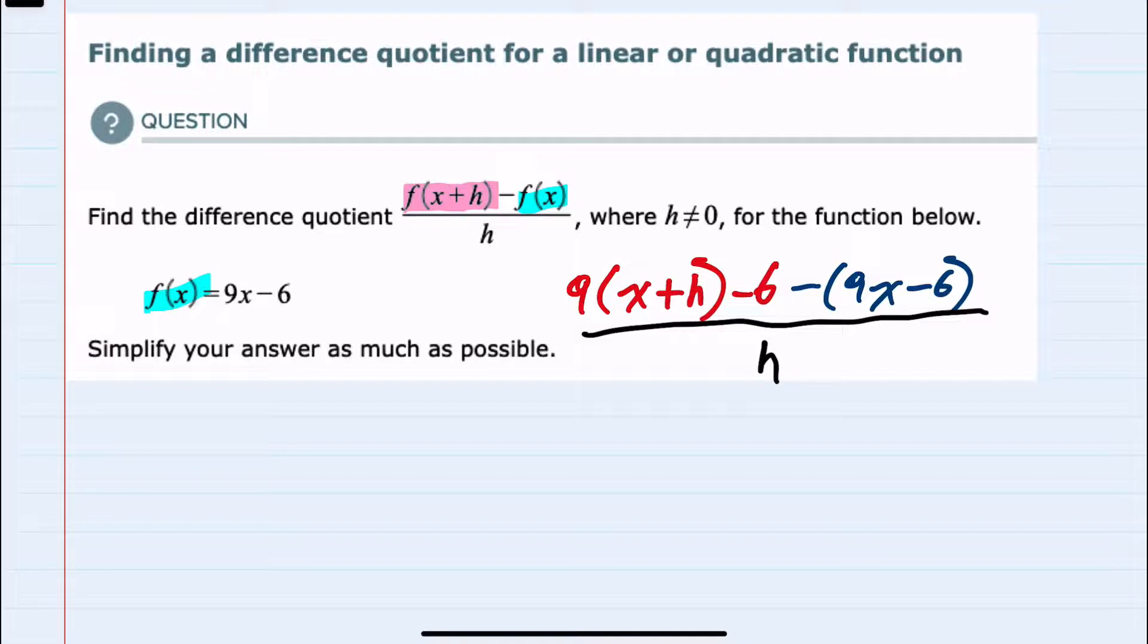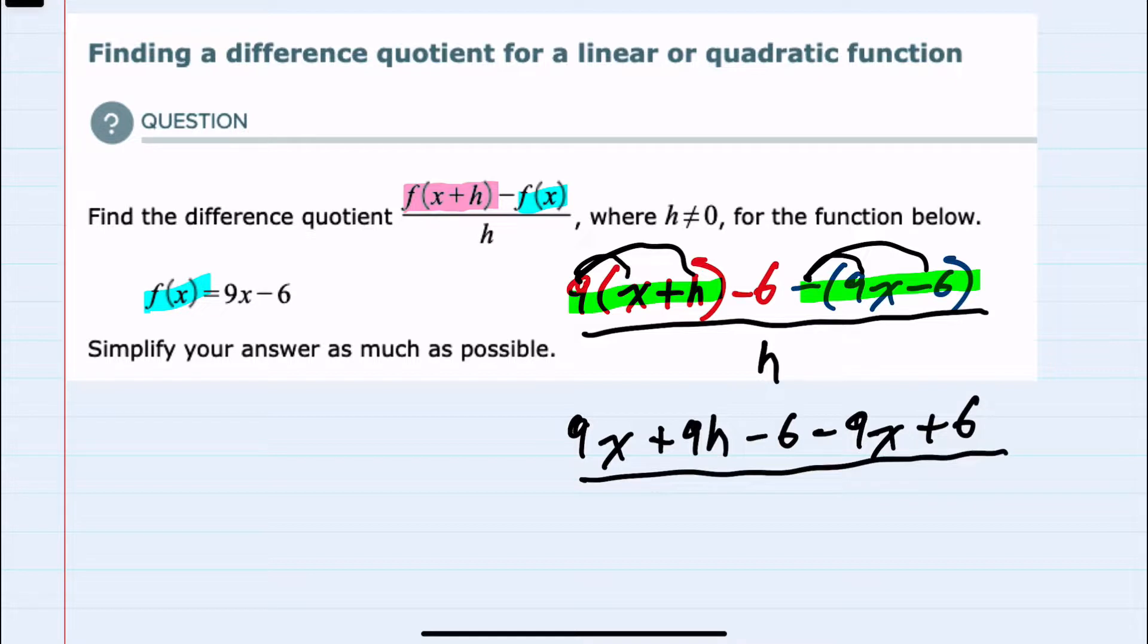From here we can begin to simplify, and following the order of operations in the numerator I have some multiplication that I should be doing to get things started. In the first part we're distributing the 9. So 9 times x would be our 9x, 9 times h would be 9h. I'll bring down the minus 6. And then we are distributing the minus in front of that second term. So that will become a minus 9x and then a plus 6. Again, this is all over h.